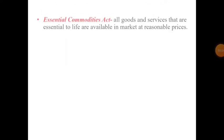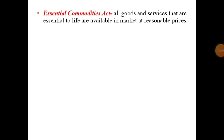Third is the Prevention of Food Adulteration Act, which protects the consumer against adulterated and spoiled food products. Next is the Essential Commodities Act — the government ensures that all goods and services essential to life are available in the market at reasonable prices.